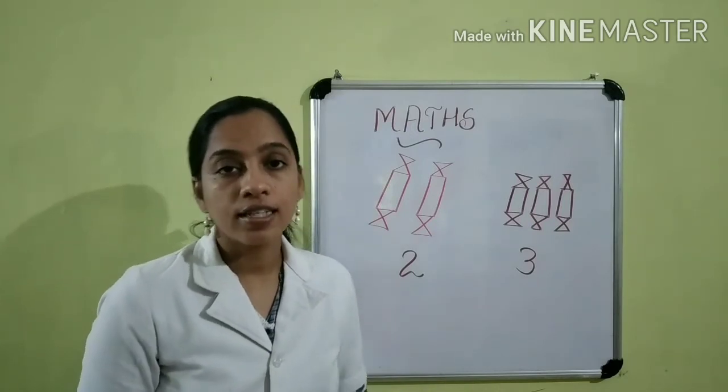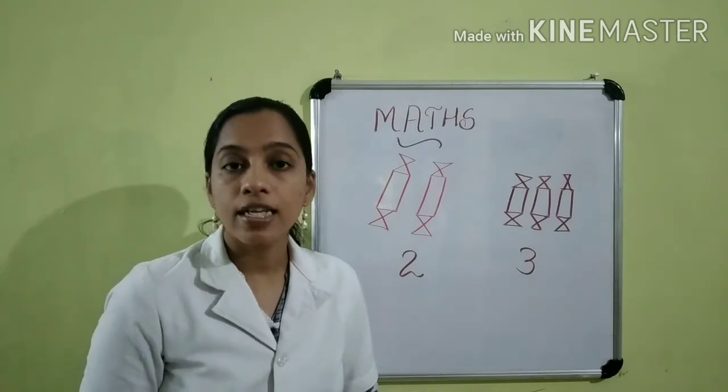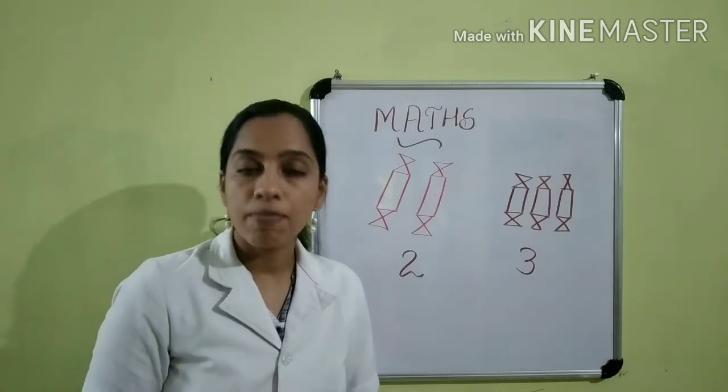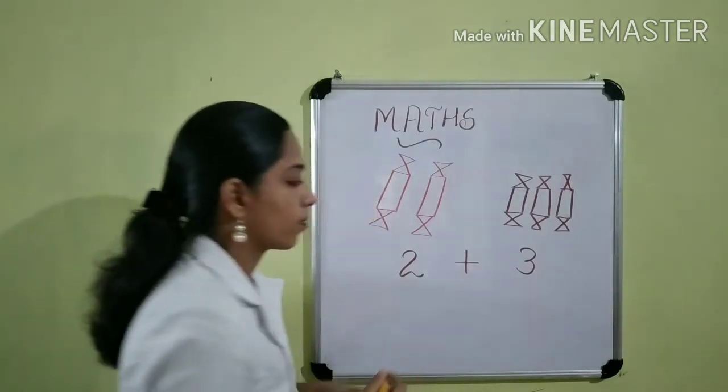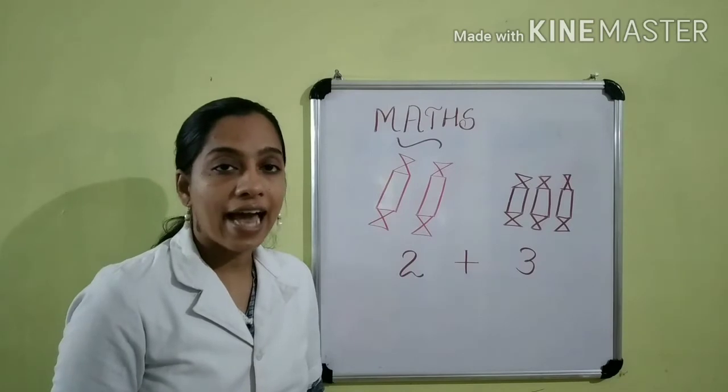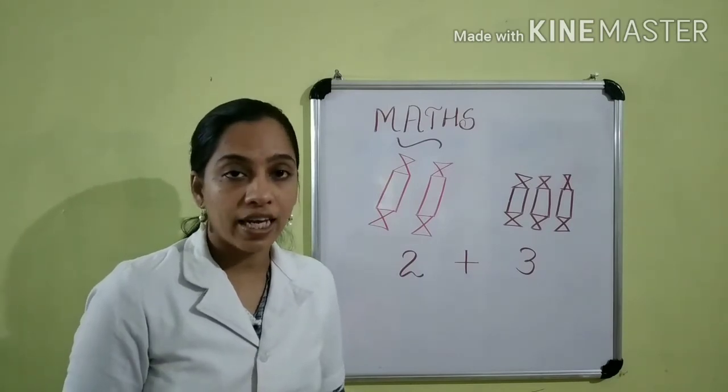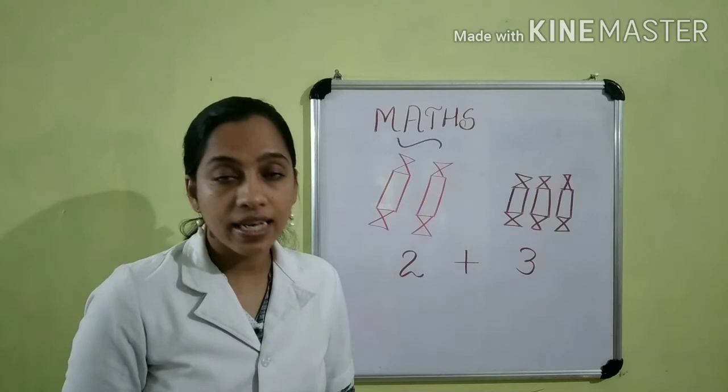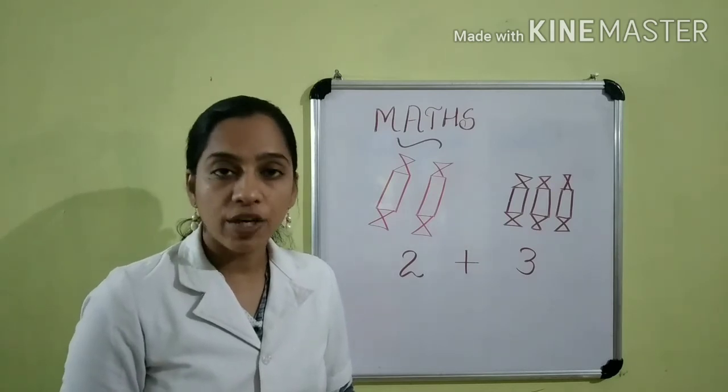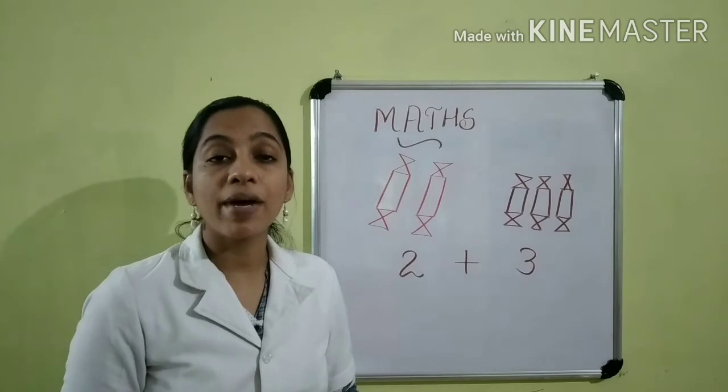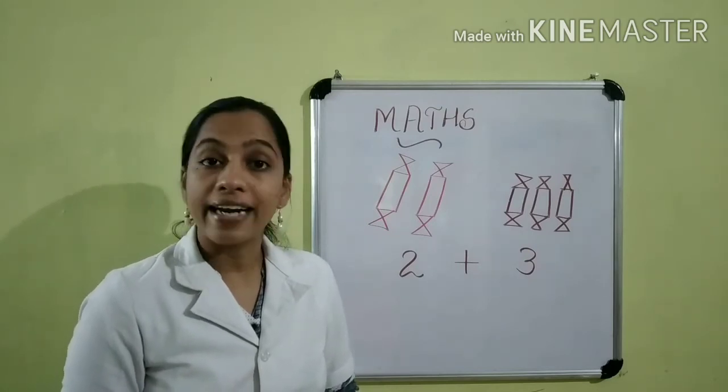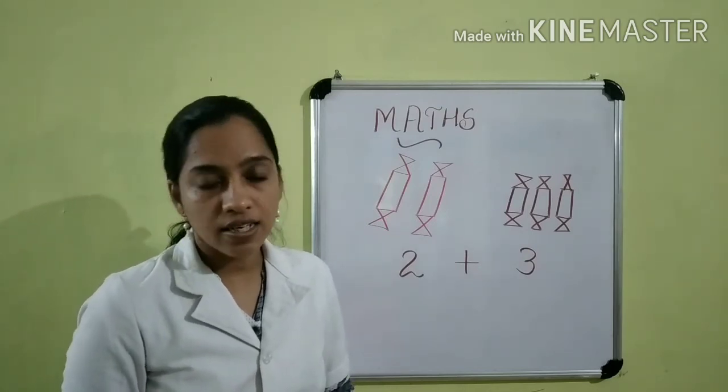Tell me, children, which symbol we used here? Yes, we learned the symbol of addition is plus. So, we can use plus here. Then, what is the answer if we add two and three? We learned different methods in addition: addition by counting, vertical addition, addition by counting forward, addition on number line, etc.